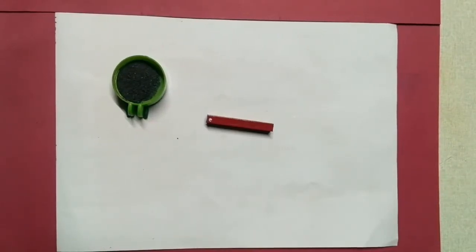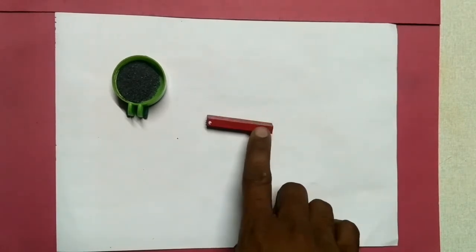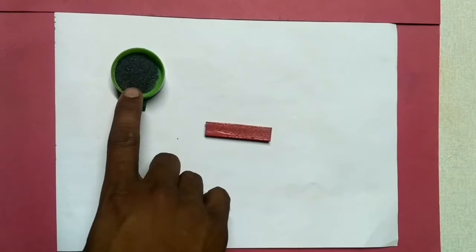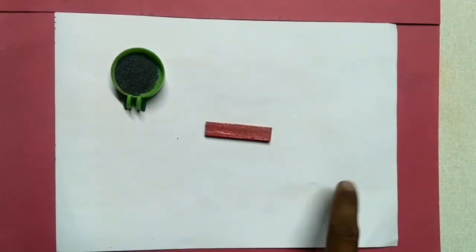For experimental demonstration of magnetic force lines you require just three things. One is a bar magnet, the other one is iron dust which you can get from an iron smith, and the last one is cardboard or a paper board.